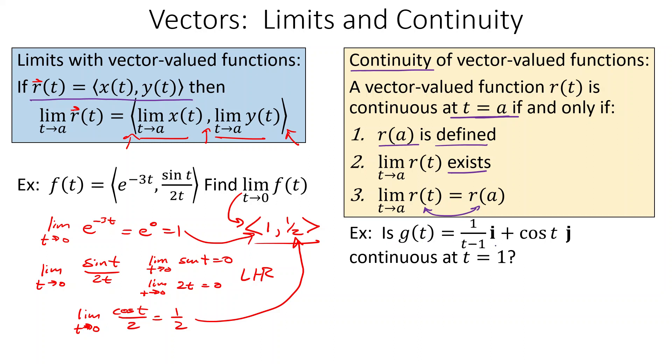So we'll take a look. Is g(t), which is equal to this guy here, 1/(t-1)i plus cos(t)j, is it continuous at t equals 1? So our first thing is g(1) defined. Well, g(1) would be 1/(1-1)i plus cos(1)j. So cosine, we don't have any problems with, that's fine. This is a problem. It's 1/0. All right. So that's undefined. All right. So it's undefined. So is it defined? No, it's not defined.